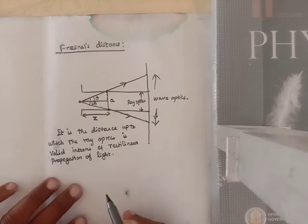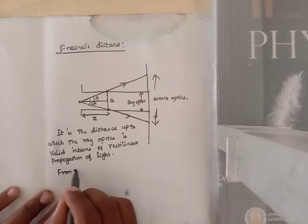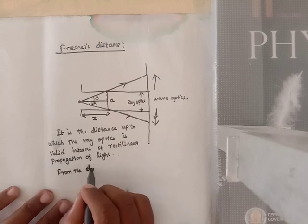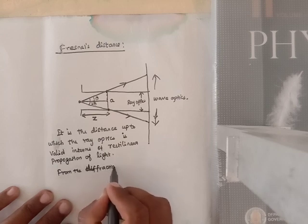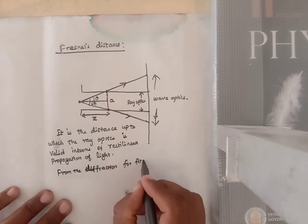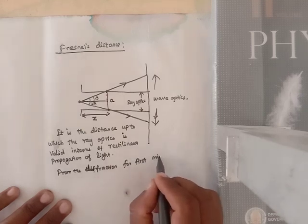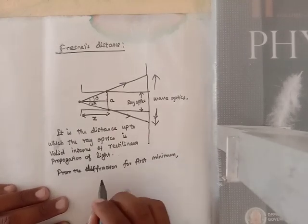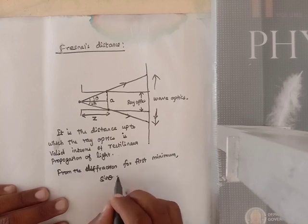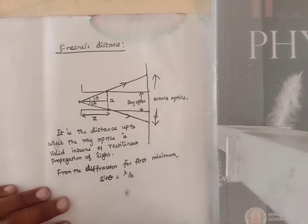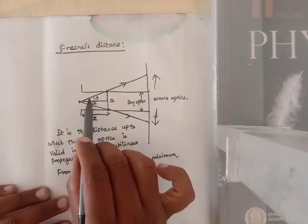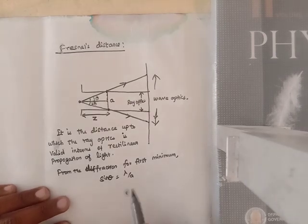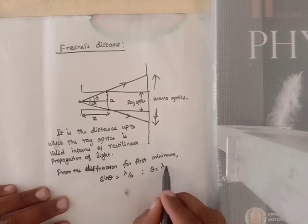From the diffraction equation for the first minimum, we know that sin theta is equal to lambda divided by A. For smaller angles, sin theta is approximately equal to theta, so we can write theta is equal to lambda divided by A.